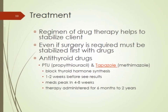Medications for hyperthyroidism include PTU and Tapazole (methimazole), which are antithyroid drugs. Their action is to block iodine and block T3 and T4 production. Results are not seen right away — it takes a couple of weeks, peaking in four to eight weeks. Methimazole is contraindicated in pregnant women as it can cause early abortions or miscarriages. Side effects include GI upset, agranulocytosis (extremely low WBCs), fever, and rashes.